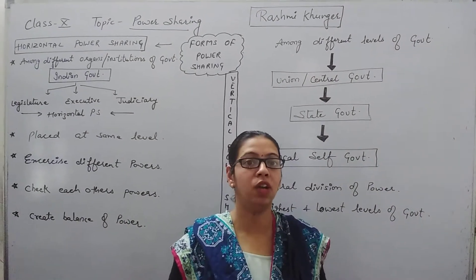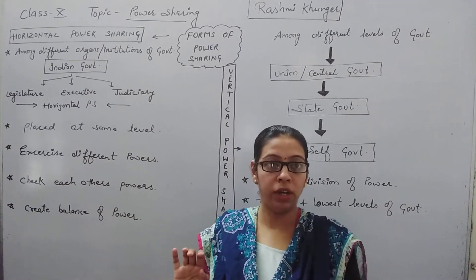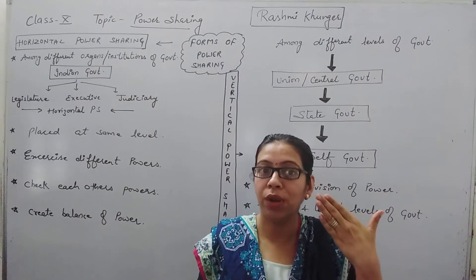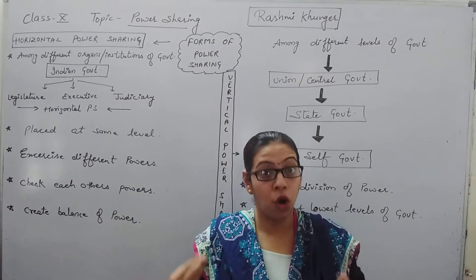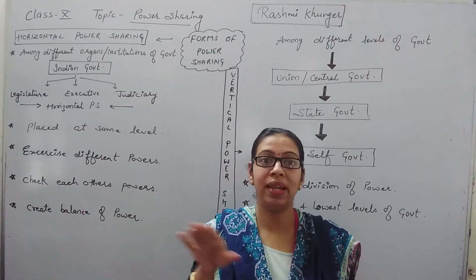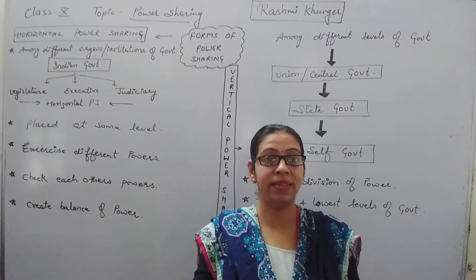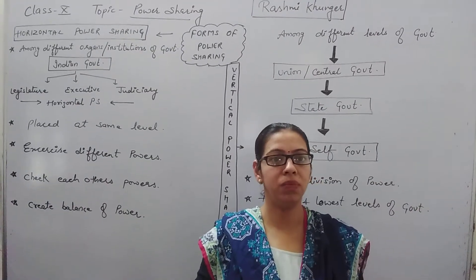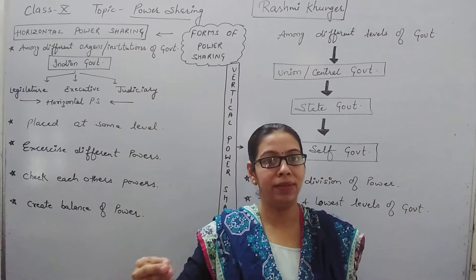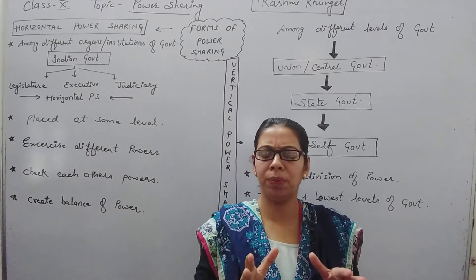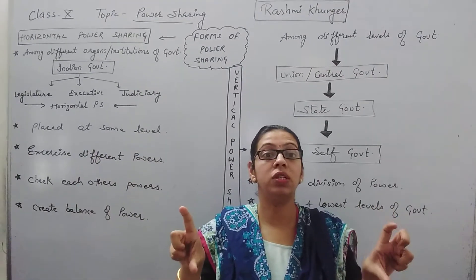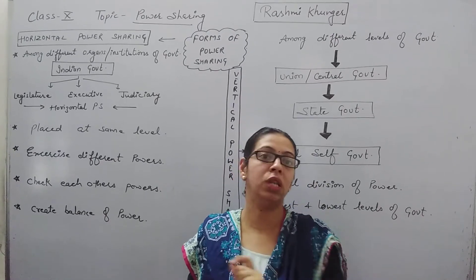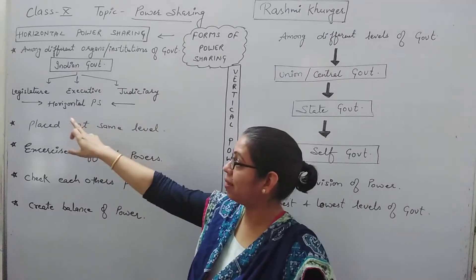In ninth class you did one chapter on working of institutions — these are those institutions only, the organs or institutions. Like I can't say my eyes are more important than my arms — no organ of my body can be considered more important than others, because all these organs together give me an integrated body, and every organ has its own place. So whenever the word 'organ' is used in a question, it means horizontal power sharing.